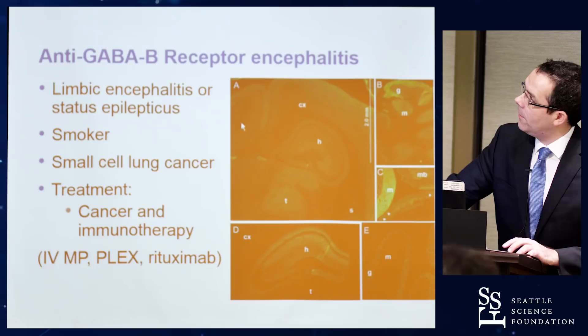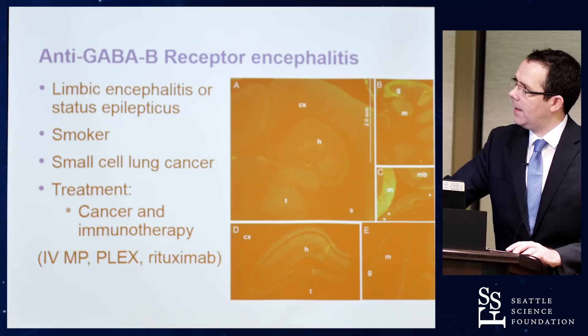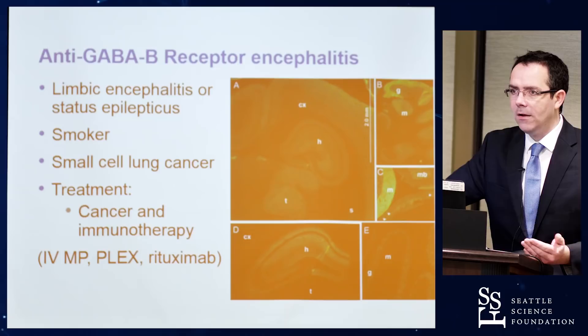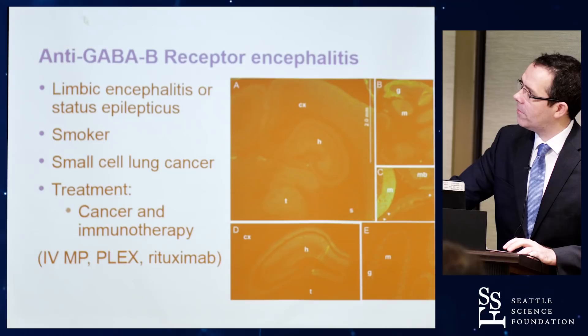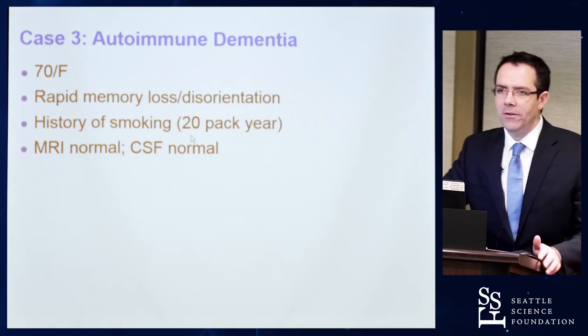GABA-B receptor encephalitis often presents with status epilepticus — patients come in with status epilepticus. It is common in smokers and associated with small cell lung cancer. Treatment generally involves treating the cancer and using aggressive immunotherapy. Because it is an antibody to a cell surface marker, it tends to respond well to immunotherapy. It is one of the most common antibody-associated causes of new onset status epilepticus and something important to look out for.